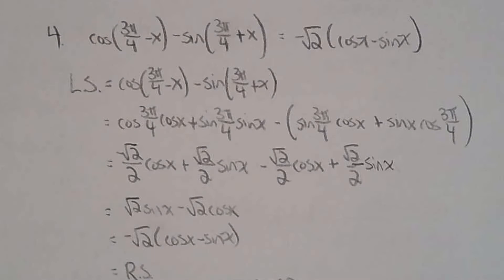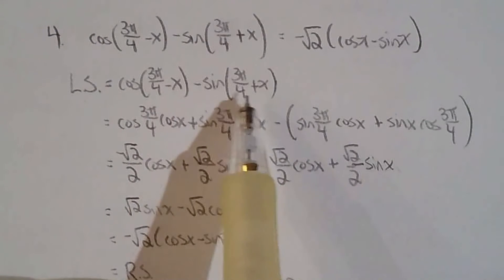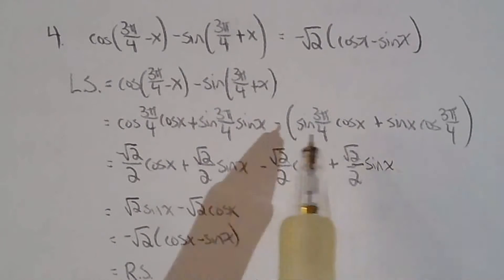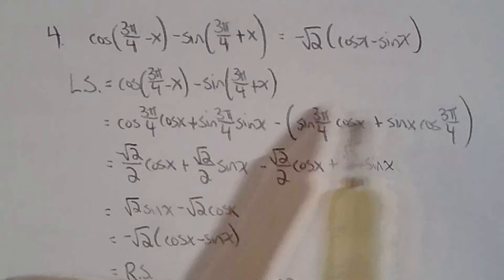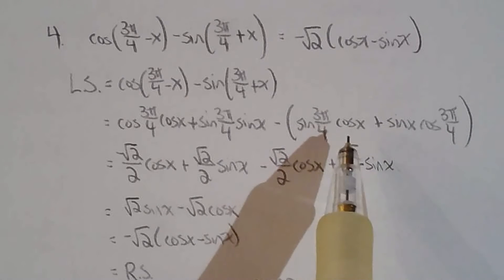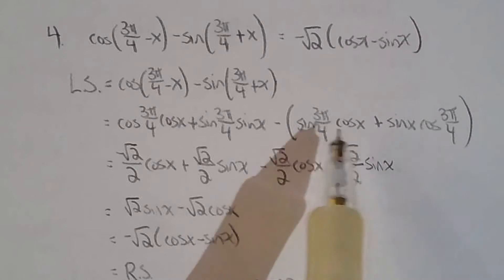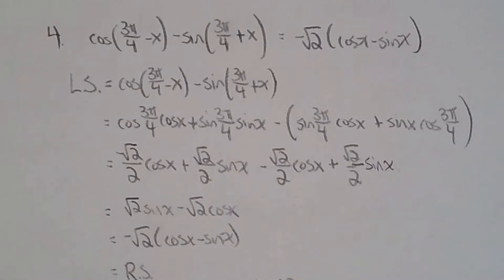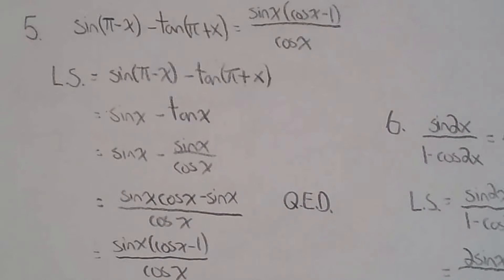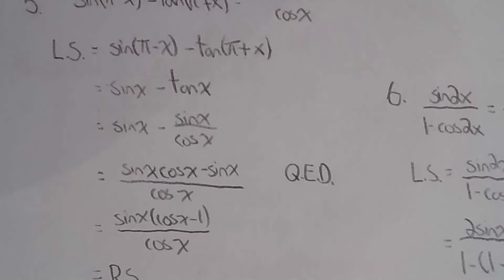Be careful when you expand using the addition formula for sine — you have to put brackets, because both terms together form the addition formula for sine, not just the first term. So make sure you put the brackets there.